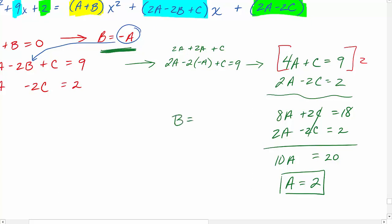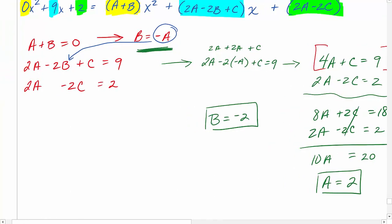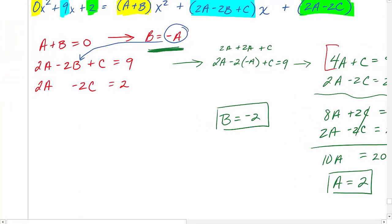And then lastly, we need to solve for c. So I'm just going to take a equals 2 and plug it in here and solve for c. 2 times 2 minus 2c equals 2. Negative 2c equals negative 2, making c equal to 1. So we're ready to plug a, b, and c back into our original equation and we'll have our partial fraction decomposition.